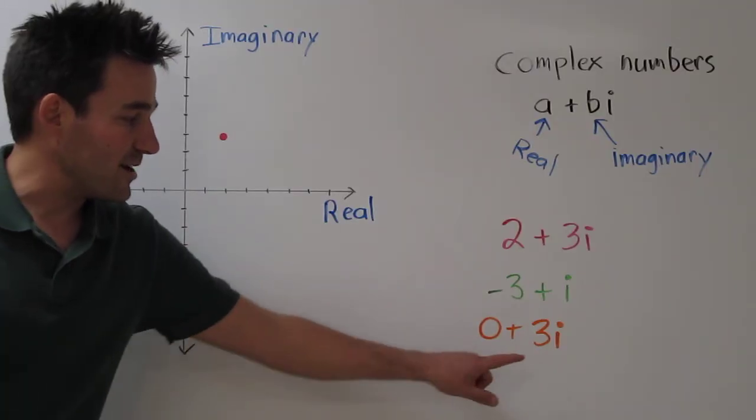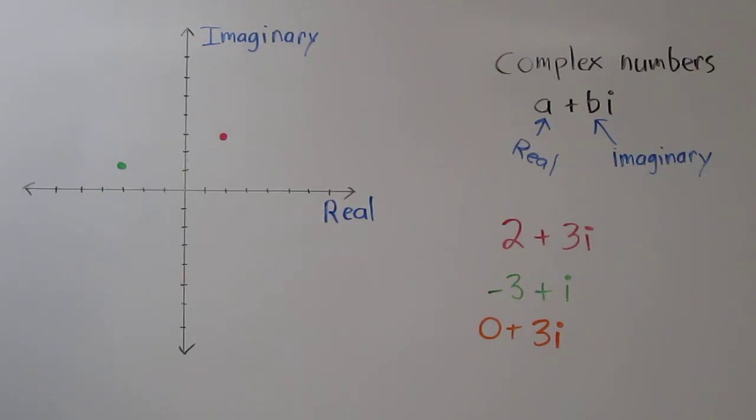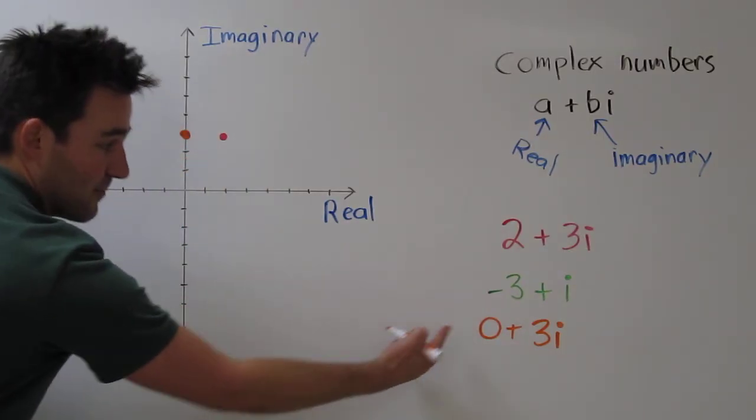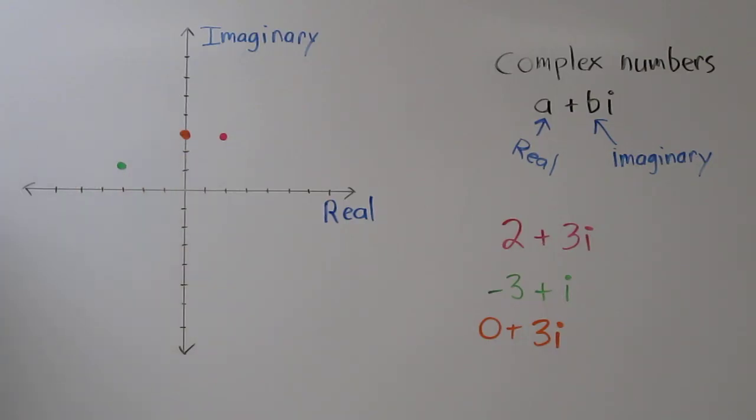And then we would see that the real part is 0, and the imaginary part is 3. So we go over 0 on the real axis, and up to 3 on the imaginary axis. So this complex number is plotted right there.